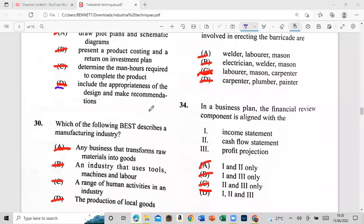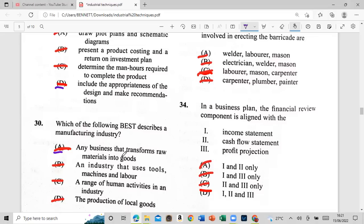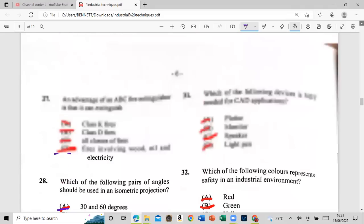Which of the following best describes the manufacturing industry? I'm giving you guys time. Any business that transforms raw materials into goods? B, an industry that uses tools, machines, and labor? C, a range of human activities is an industry? Or D, the production of local goods? That is A, any business that transforms raw material into goods. We'll get that one correct. I'm going to say 31 or 31.